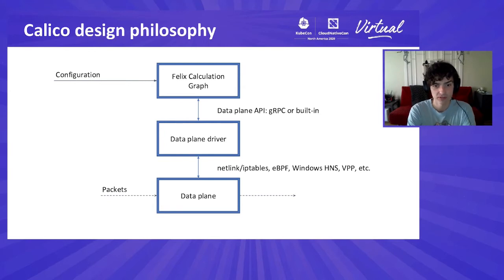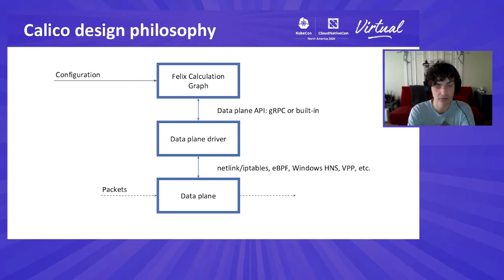The data plane driver in Calico is designed to be as simple as possible — it just translates events emitted by the calculation graph into the right messages for the underlying data plane implementation, leaving the hard work of interpreting configuration and making decisions up to the calculation graph. While we started with just a single implementation, we've since been able to extend support to a variety of technologies, including an eBPF-based data plane, a Windows HNS data plane, and of course a data plane built on VPP.